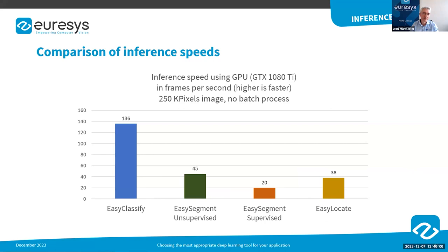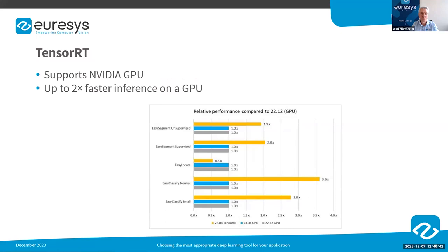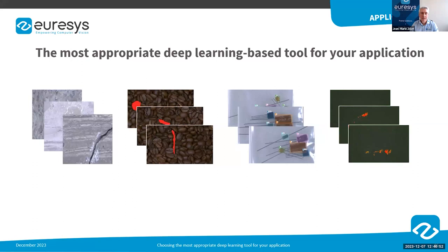In terms of speed, as shown in the chart, for the same image resolution the classifier is the fastest tool while the supervised segmenter is the slowest. To further increase speed, Uresys has recently introduced the concept of engines — tools used to run the neural network. For platforms based on Intel CPU or Intel GPU, we recommend using the OpenVINO engine, which is particularly interesting when inference is performed by the CPU. When the platform is equipped with an NVIDIA GPU, we recommend using the TensorRT engine.